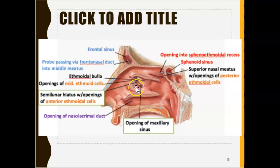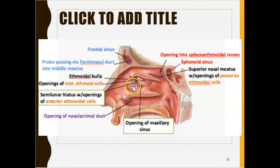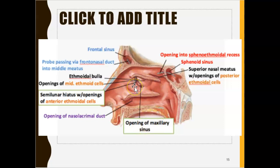The frontal sinus also comes out from the middle meatus. And the maxillary sinus — located right over here — when it builds up with mucus, it also drains into the middle meatus. There's a duct that channels all the mucus there and it comes out from the middle meatus.